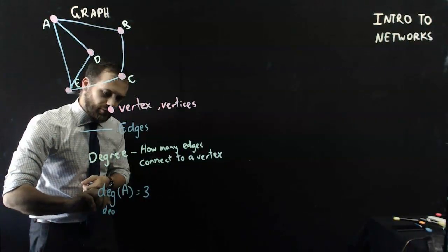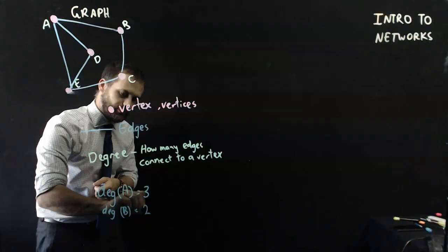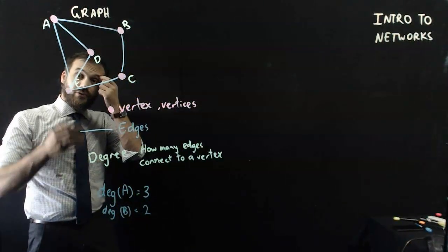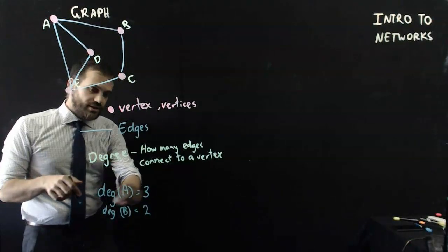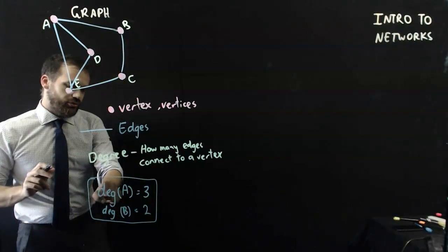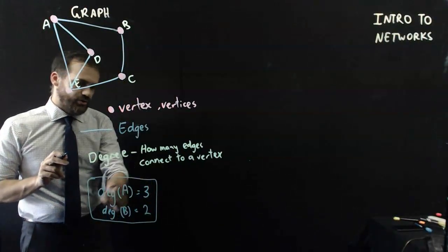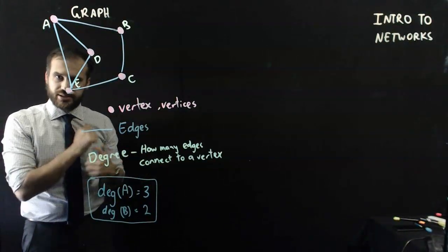What about the degree of B? That's equal to 2. The degree of E, that's equal to 1, 2, 3. The degree of D, 1, 2. The degree of C, 1, 2. This is some new notation that you need to learn. The degree of this is equal to that. The degree of that is equal to that. That might be a question on an exam that you would have to answer.